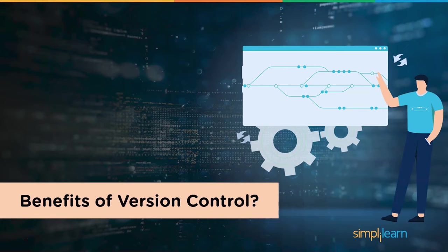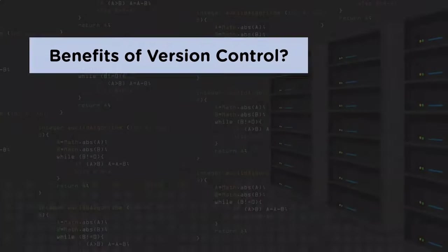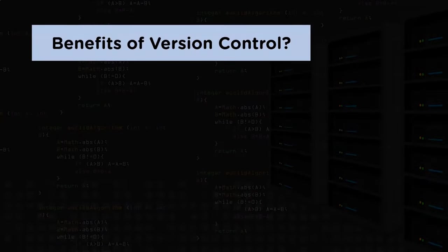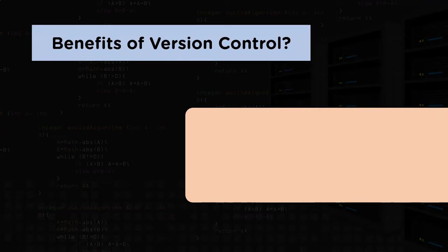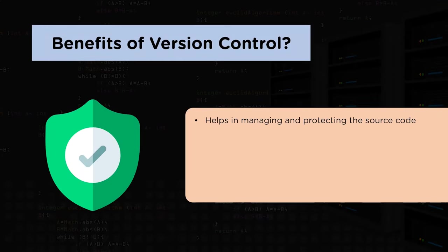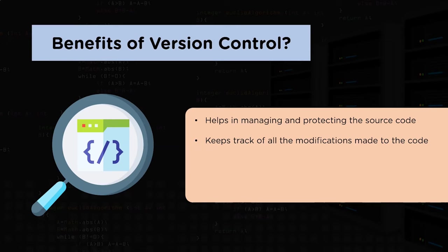Now let's check the benefits of version control. The first and foremost advantage is that it helps in managing and protecting the source code. The system helps the software team by keeping track of all modifications being made to the code. It also protects the source code from any unintended human error and consequences.